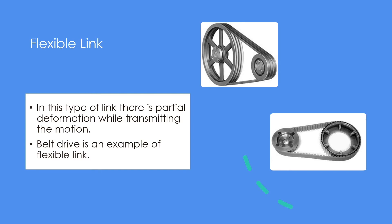Now let's talk about the flexible links. In the case of flexible links, there is a partial deformation while transmitting motion. For example, belt drive or rope pulley are examples of flexible links. Here we know that while transmitting motion the belt changes its shape. Another useful example would be escalators.